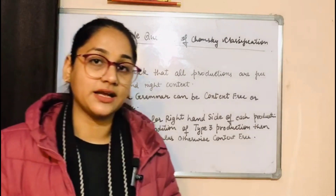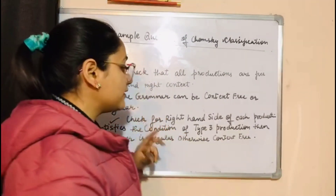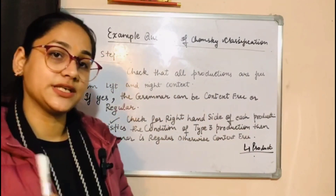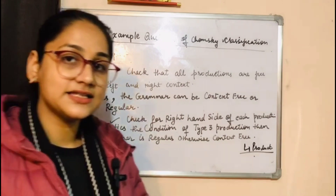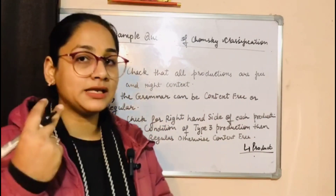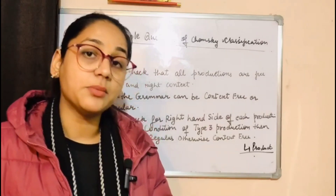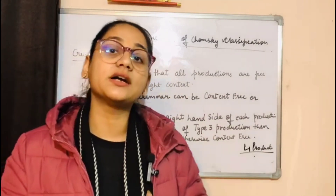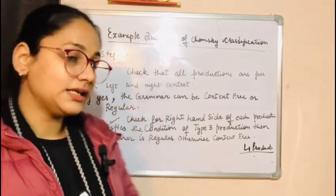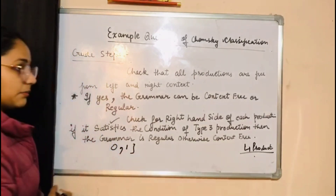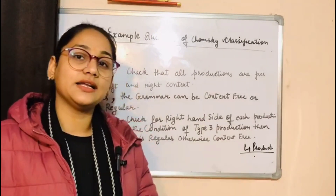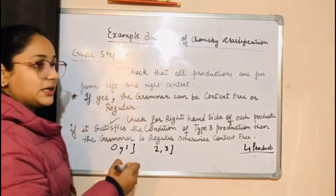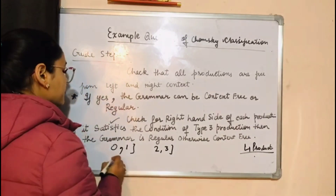Checking context means we have to check phi and psi. For a grammar with some productions, we have to check in every production whether there is some context, meaning phi and psi. If phi and psi are present, then the grammar will be Type 0 or Type 1 — that is, unrestricted grammar or context-sensitive grammar. If phi and psi are not present, then the grammar will be Type 2 or Type 3.